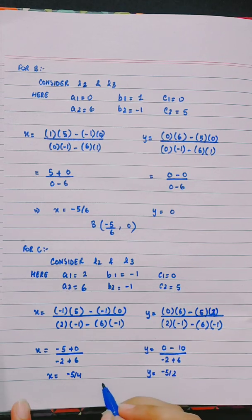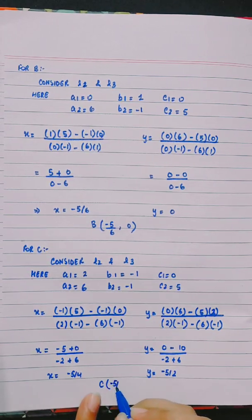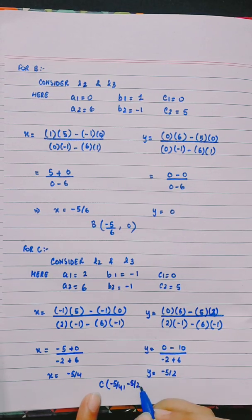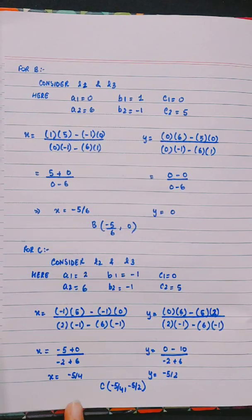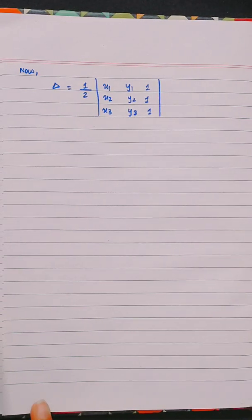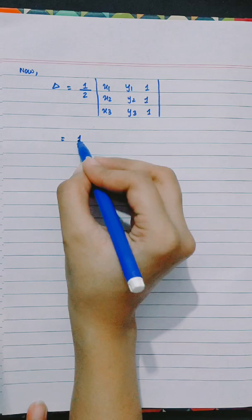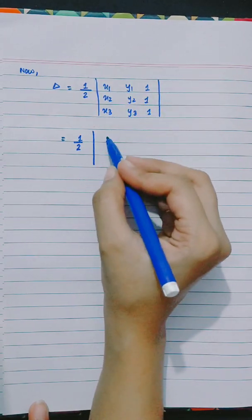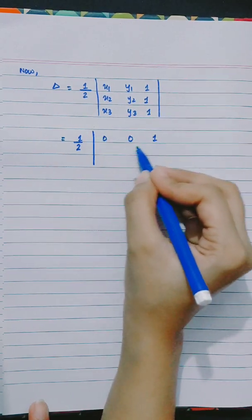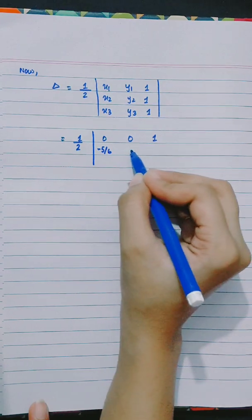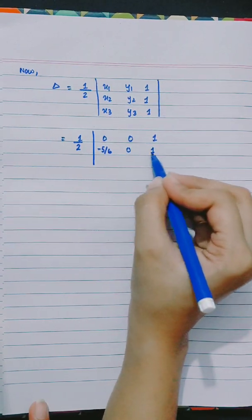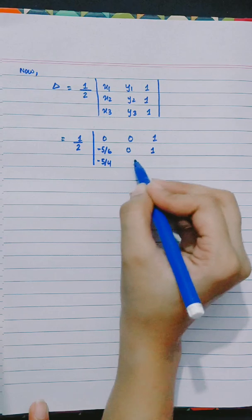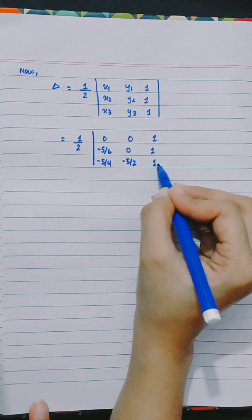C is minus 5 by 4, minus 5 by 2. Now area of triangle equals half of the determinant x1 y1 1, x2 y2 1, x3 y3 1. The coordinates are 0, 0, 1, minus 5 by 6, 0, 1, minus 5 by 4, minus 5 by 2, 1.